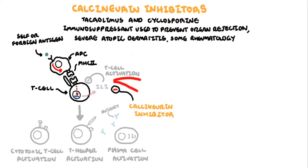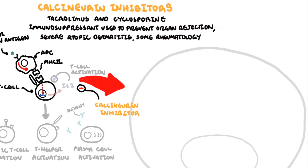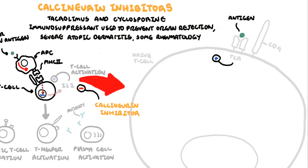The mechanism of action is a bit more complicated. Let's take a closer look at how naive T cells become activated. An antigen is presented to T cell receptors, which will initiate a cascade of intracellular events. This begins with activation of phospholipase C. Phospholipase C hydrolyzes phosphatidyl inositol-4,5-bisphosphate, also known as PIP2, to generate the secondary messengers inositol-1,4,5-triphosphate (IP3) and diacylglycerol (DAG).